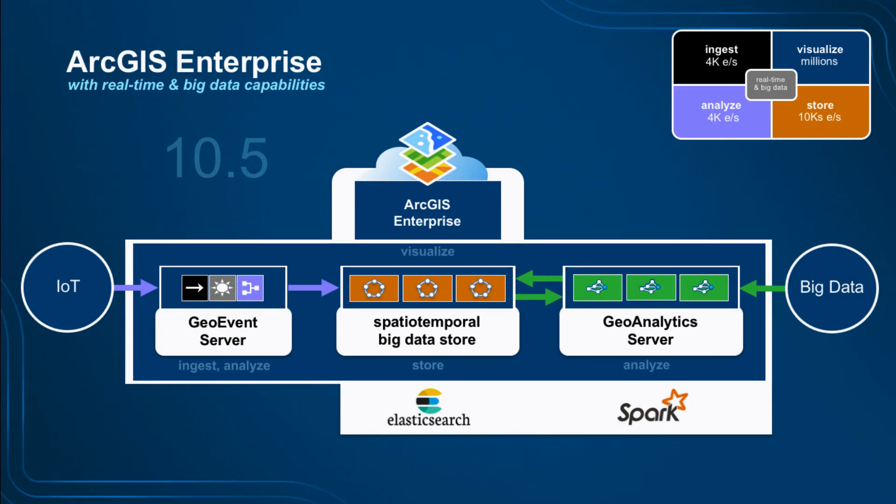At the 10.5 release, the Spatial Temporal Big Data Store remains a fundamental component for real-time and big data aspects of our platform — providing a place to put real-time stream data and enabling GeoAnalytics Server (new at 10.5) to do batch analysis on stored observations. You can also load data in from a big data file system like HDFS or Hive, or from a folder full of shapefiles. GeoAnalytics is fundamentally based on Spark, with user-defined functions and extended spatial capabilities, and can either load data into the big data store for visualization or perform analysis before writing.